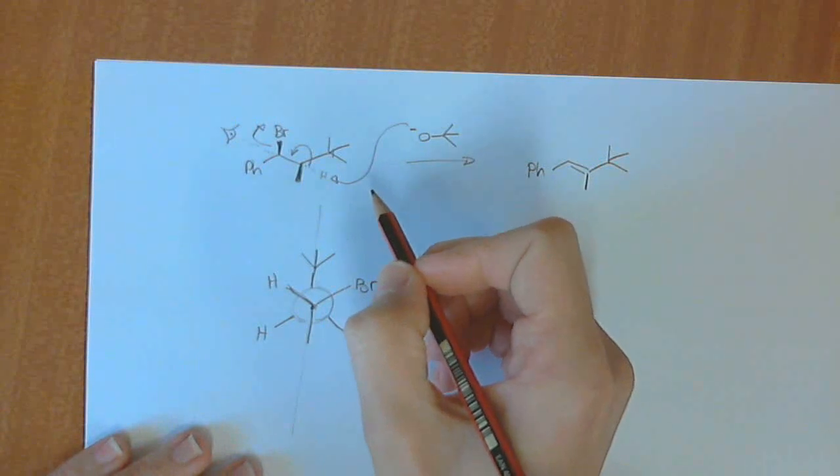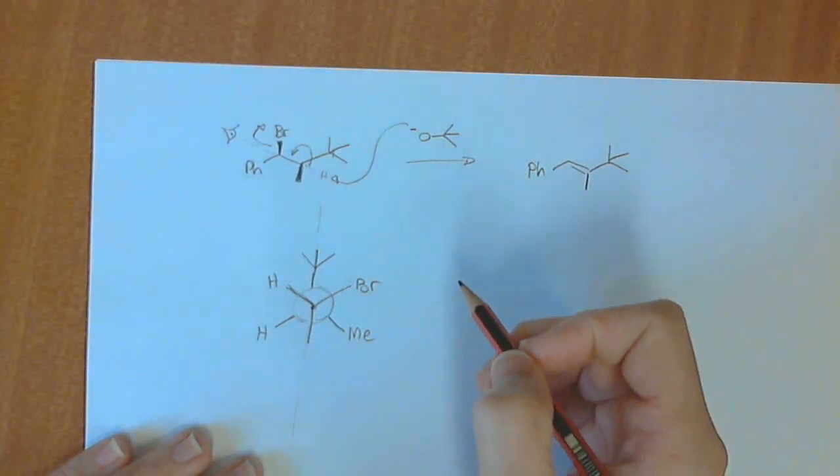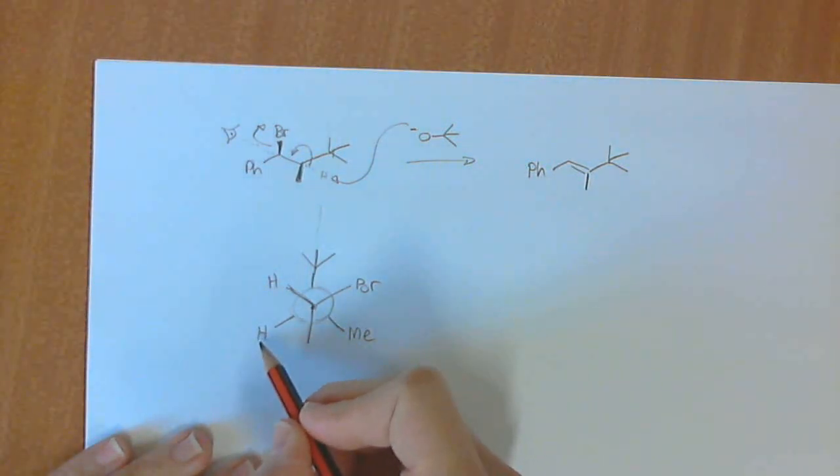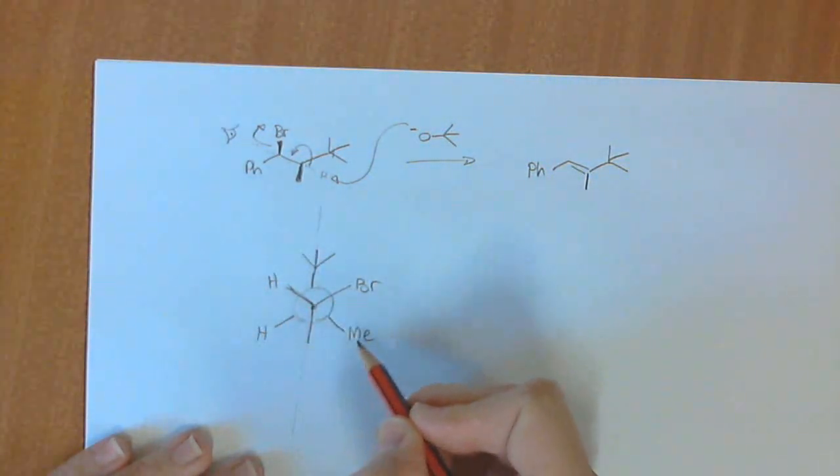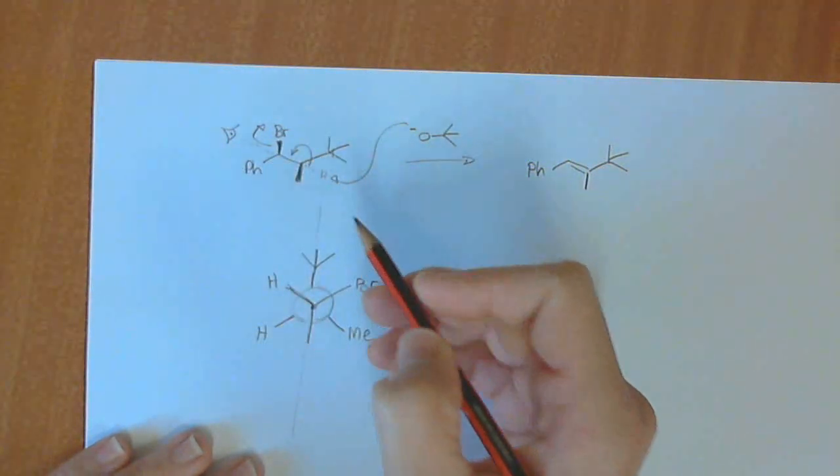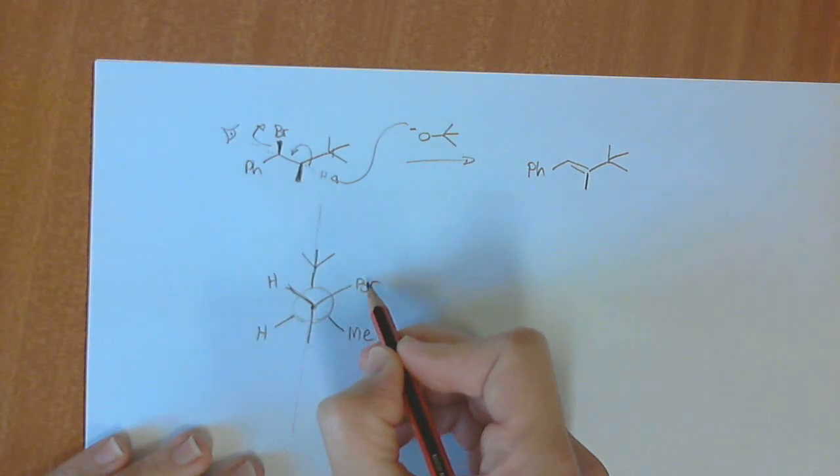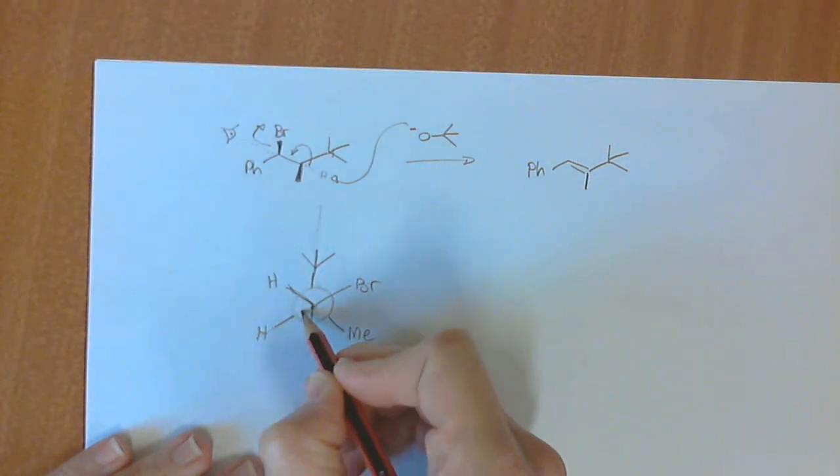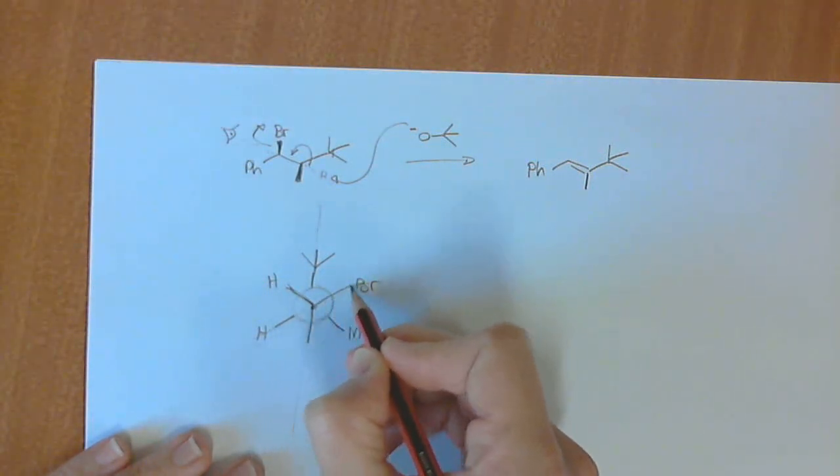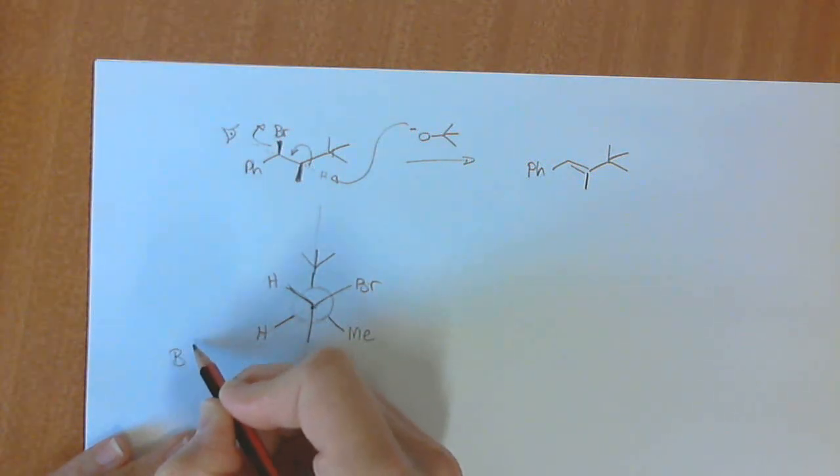So hopefully you remember that from last year. And then the important thing here is that this conformation that has been drawn out, our first one, just from this structure over here, shows that this proton over here is already anti-periplanar to this bromine. So the proton at the back over here is anti-periplanar to this bromine, which is on the front carbon.